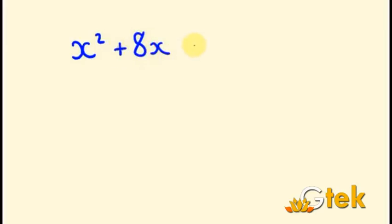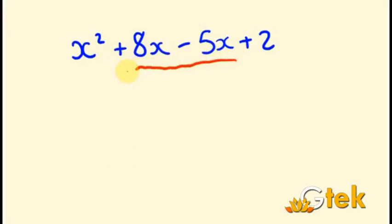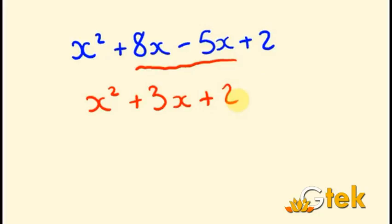Now taking X squared plus 8X minus 5X plus 2. The X component appears twice and X squared once. Simplifying: 8X minus 5X gives 3X. There is only one X squared term, so we keep it as is. The result is X squared plus 3X plus 2.